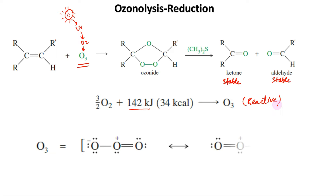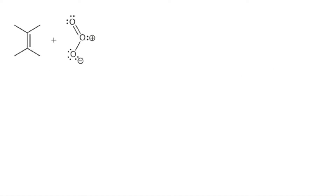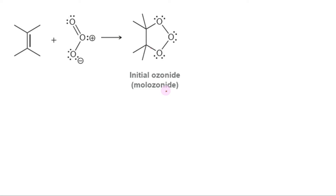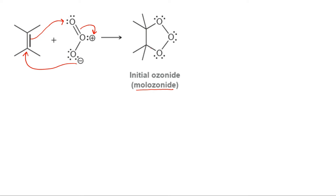Ozone has 142 kilojoules per mole of excess energy over oxygen and is much more reactive. A Lewis structure of ozone shows that the central oxygen atom bears a positive charge, and each of the outer oxygen atoms bears half a negative charge. Ozone reacts with an alkene to form a cyclic compound called a primary ozonide or malozonide, because one mole of ozone has been added. The formation can be understood by tracking the movement of electrons, balancing the positive charge on the middle oxygen by breaking the alkene pi bond towards it, making this oxygen electron deficient. This creates a positive charge on the alkene carbon, which is balanced by the negative charge on oxygen, forming the malozonide. The malozonide has two peroxy linkages, so it is quite unstable.